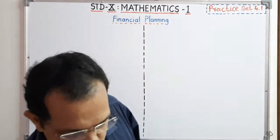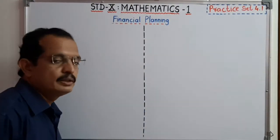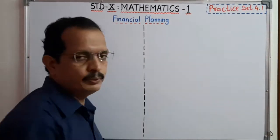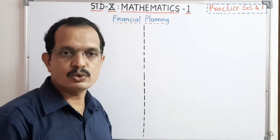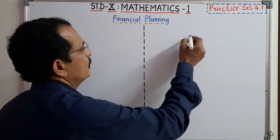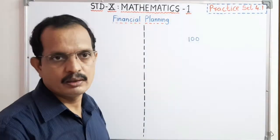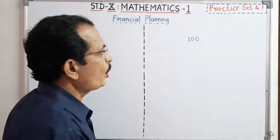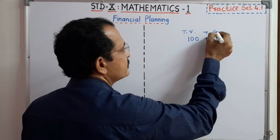Before going to the questions, some information we have to share. Suppose taxable value — what is taxable value, what is total value — that total value is also called as invoice value, and what is GST. Suppose the cost of one product is 100 rupees; that amount is called as a taxable value. On this taxable value, we have to add GST.